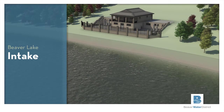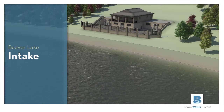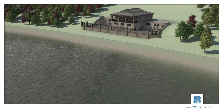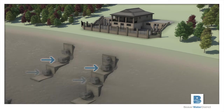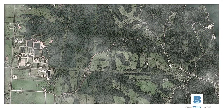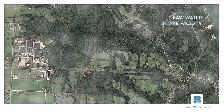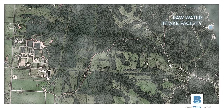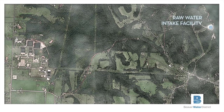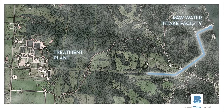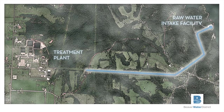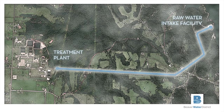Water is withdrawn from Beaver Lake through our raw water intakes. The intakes can withdraw water from different levels in the lake in order to access the highest quality raw water. It all starts at our raw water intake facility here on Beaver Lake. The water is pumped directly to our treatment plant through three pipelines, traveling a distance of approximately two miles.